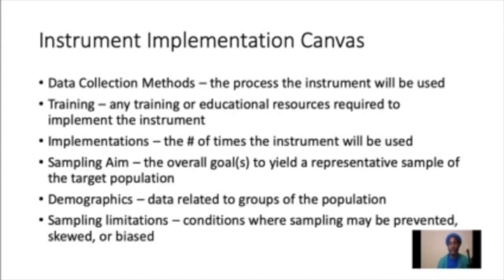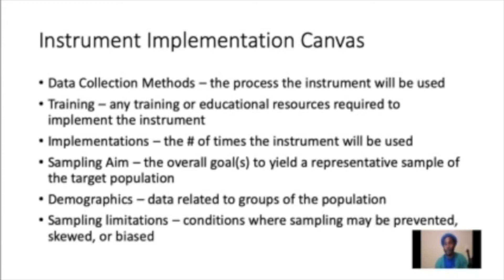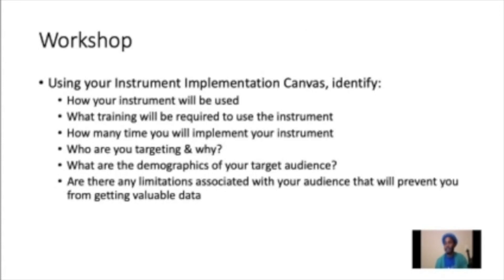The sampling aim refers to the overall goal you have in place to get enough results from the people you are targeting — what is the goal you are trying to reach and who are you targeting? Demographics, similar to what we discussed with customer personas, is the data related to the groups and populations you're trying to serve. Sampling limitations are the conditions under which sampling may be prevented — scenarios where it may be difficult to gather data, where your data may be biased or skewed.